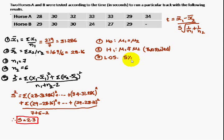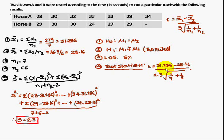Level of significance you consider as 5%. Test statistic, we have to consider the formula T is equal to 31.286, x1 bar value 31.286, x2 bar value 28.16, S value 2.3, 1 by n1 is 7, 1 by n2 is 6.